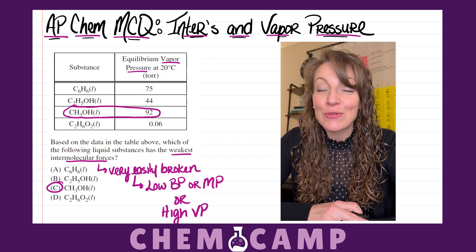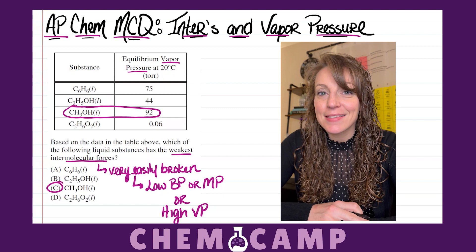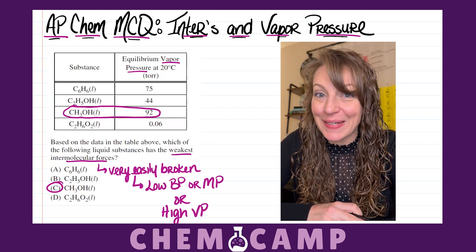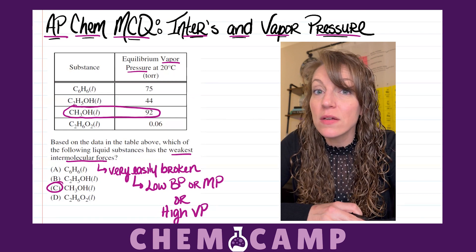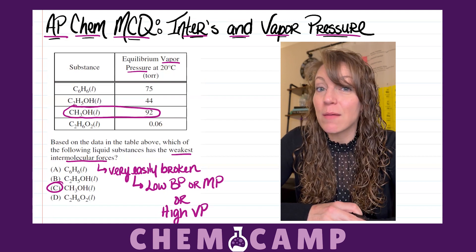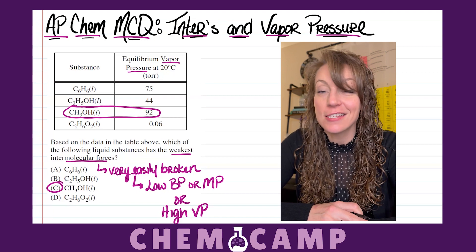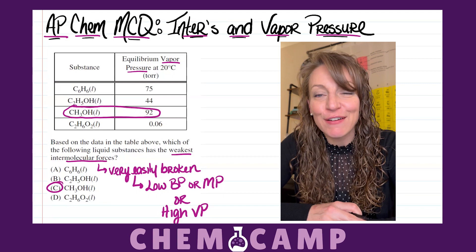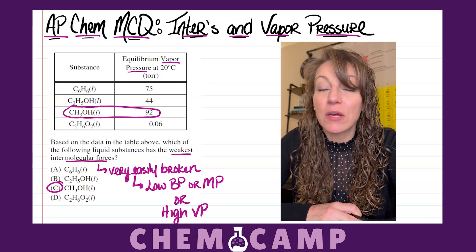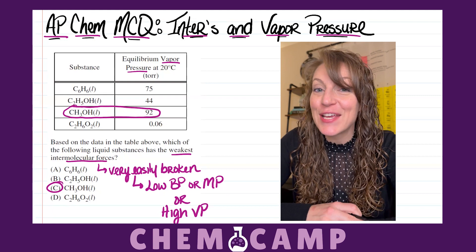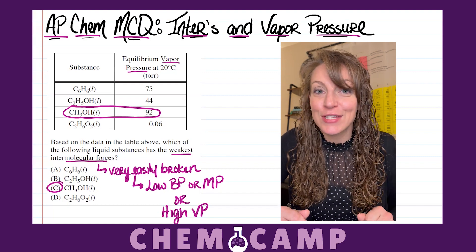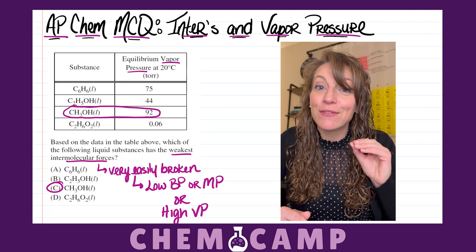This type of question usually throws students for a loop because they want C6H6 — the non-polar molecule — to be the answer, but it's not. The College Board relies on this, because look at their very first choice in letter A: they give you C6H6, which is benzene, a non-polar molecule. Anytime you have just carbons and hydrogens bonded to each other, it's a strong indicator of a very symmetric, non-polar molecule — and non-polar molecules usually experience the weakest type of intermolecular forces: London dispersion forces. So the College Board wants you to see C6H6, pick it right away, and move on — but that's going to cost you a point. You have to rely on the data.